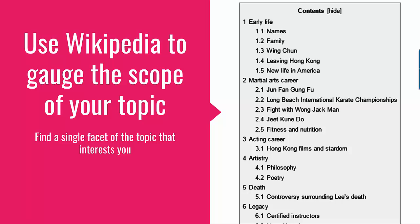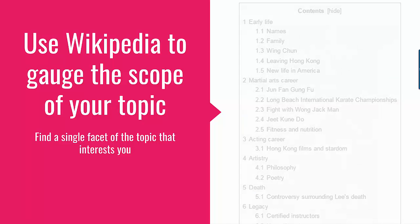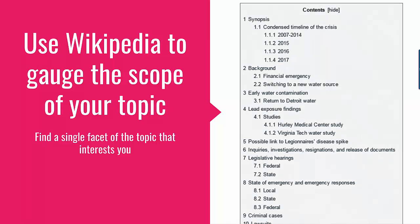Remember, you only have five to seven minutes for your speech. You can't include everything in that amount of time, nor do you want to. If you are giving a speech on a person, you probably do not want to provide an entire biography of that individual. Similarly, with other topics, avoid the impulse to cover the subject comprehensively.